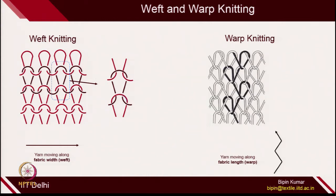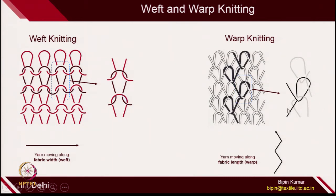Warp knit and weft knit structures can be easily visualized by looking at the structure itself. In a warp knit structure, the loop architecture is slightly disturbed — the loop is not standing vertical or symmetric as in weft knitting. In warp knitting, the loop is either tilted right or tilted left. The intermeshing is still there; each loop is intermeshed by a top loop and bottom loop. If you see any particular loop inside the structure, each loop is intermeshed at the top point and bottom point.